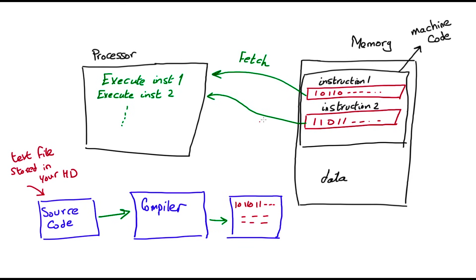When you double-click a binary file — say on Windows — the operating system loads that binary file into memory and instructs the processor to start fetching and executing the instructions translated from your source code. This is the flow for languages like C, C++, or Go. However, in Python, it's a little different.